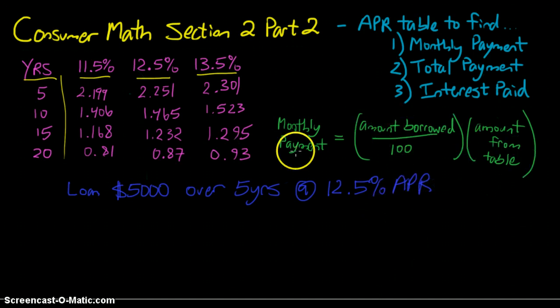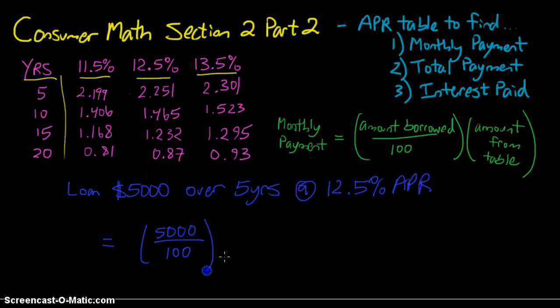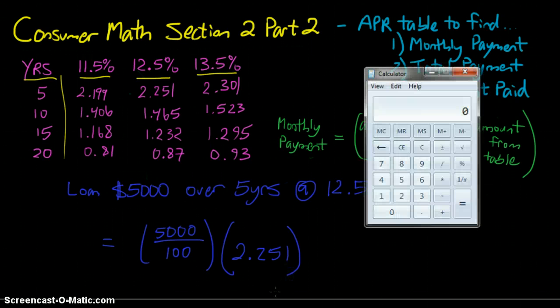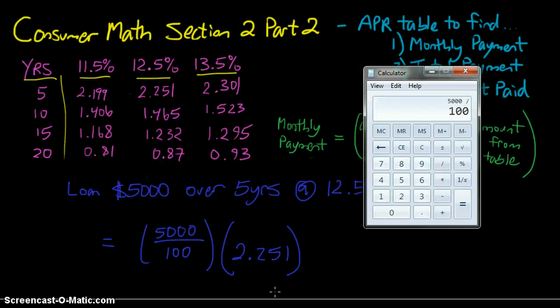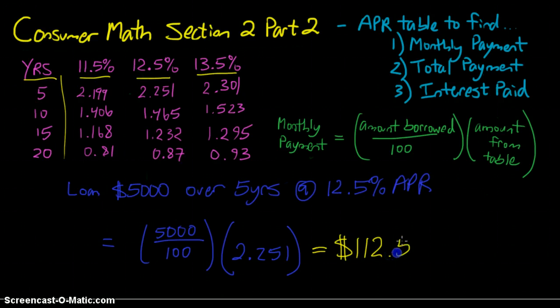So now again it's a matter of using our formula here and plugging in the correct amounts. So our amount borrowed is $5,000 which we divide by 100 to find out how many sets of $100 we're borrowing. And then we're going to multiply that entire thing by the amount from the table which again is calculated based on the number of years and the APR interest rate. So at 5 years at 12.5% we have 2.251. Use the calculator then again to help us finish: 5,000 divided by 100, and then multiply that times 2.251. Remembering that the number we get on the calculator is in dollars and cents which means two places after the decimal count. We don't have any extra here so we have nothing that we need to round and drop off so it works out nice to $112.55. So this then is our calculated monthly payment given this situation.